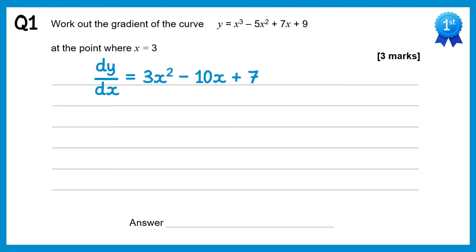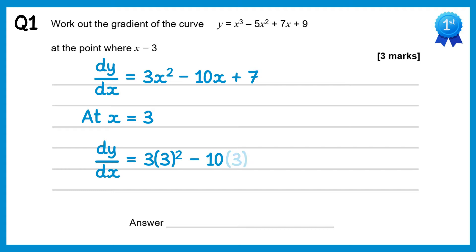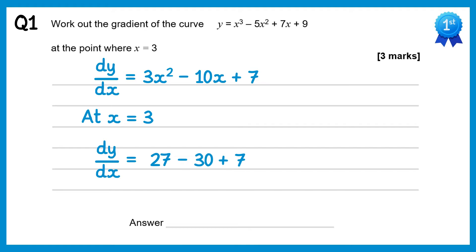Now we need to substitute in the point x equals 3, so at x equals 3, dy/dx equals 3 lots of 3 squared take away 10 lots of 3 plus 7. 3 lots of 3 squared gives you 27, negative 10 times 3 is negative 30, and then plus 7, giving a final answer of 4.